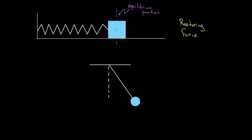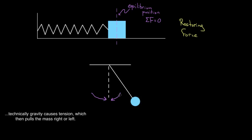For this mass on a spring sitting at the equilibrium position, the net force would be zero — that's what we mean by equilibrium. If you just sat the mass there, it would stay there. However, if I pull this mass to the right, the spring tries to restore it back to the equilibrium position by pulling to the left. And if I push the mass to the left, the spring pushes right — always trying to restore back to equilibrium. Same for the pendulum: if I pull it to the right, gravity is the restoring force trying to bring it back to the left, and vice versa. That's what we mean by a restoring force.